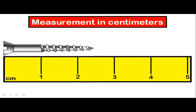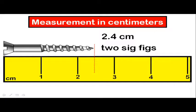Let's start by taking a look at a measurement. On this ruler, every line is worth one centimeter. So we must estimate the final digit to the tenth place. In this case, I would estimate the length of this object as 2.4 centimeters. Therefore, this measurement would have exactly two significant figures, or two sig figs for short.